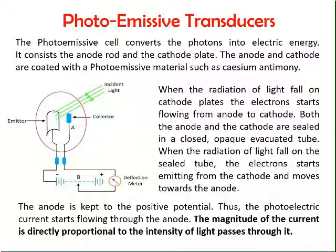A photoemissive cell converts light energy into electrical energy. Light energy consists of photons, so when light photons hit the cathode of a photoemissive cell, electrons are emitted from the cathode to the anode. The anode works as a collector of the electrical energy. The magnitude of the current is directly proportional to the intensity of light. The anode and cathode materials are coated with photosensitive materials such as cesium and antimony.